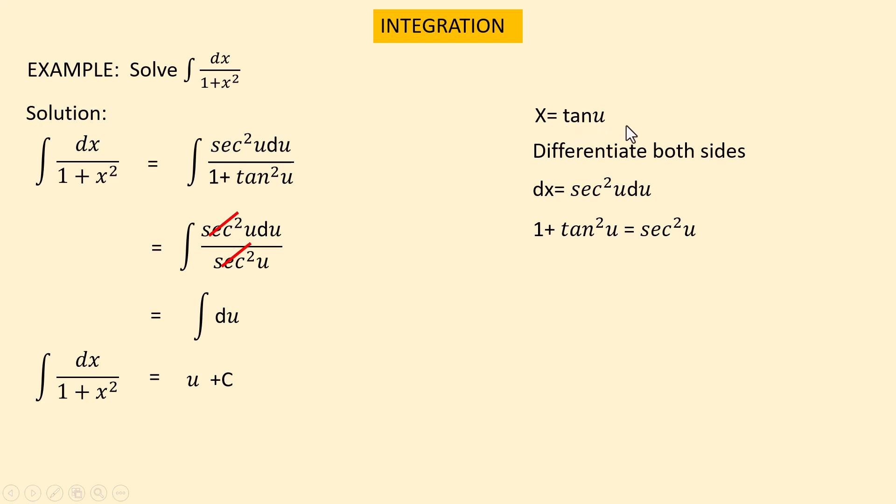We know that x equal to tan u. Then u equal to tan inverse of x. Just replace u by tan inverse of x. We get tan inverse of x plus c. That is the required solution.